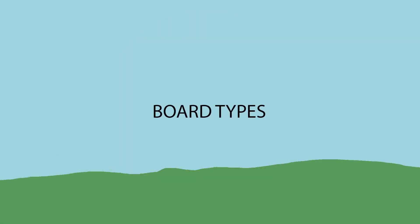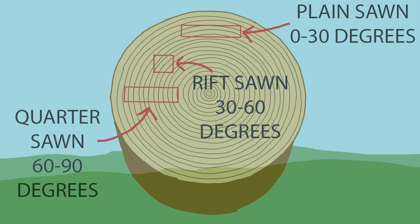So why do we care how a board is sawn? A plain sawn, a rift sawn, and a quarter sawn board will behave differently from each other and look different as well. Understanding these distinctions will help in choosing a board that will look and function the best for its use.